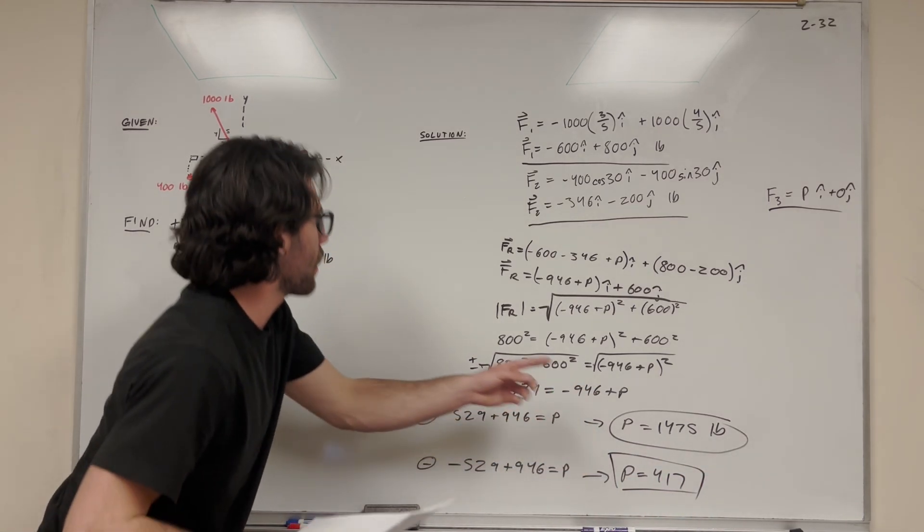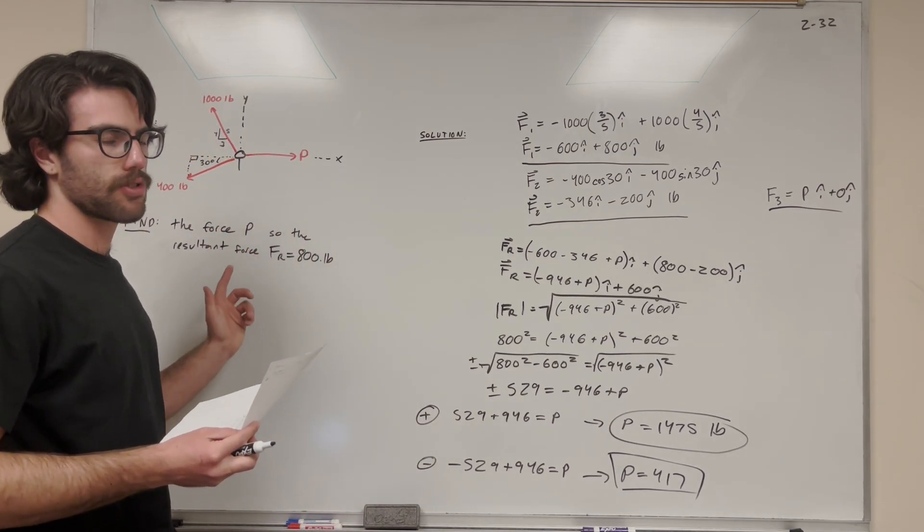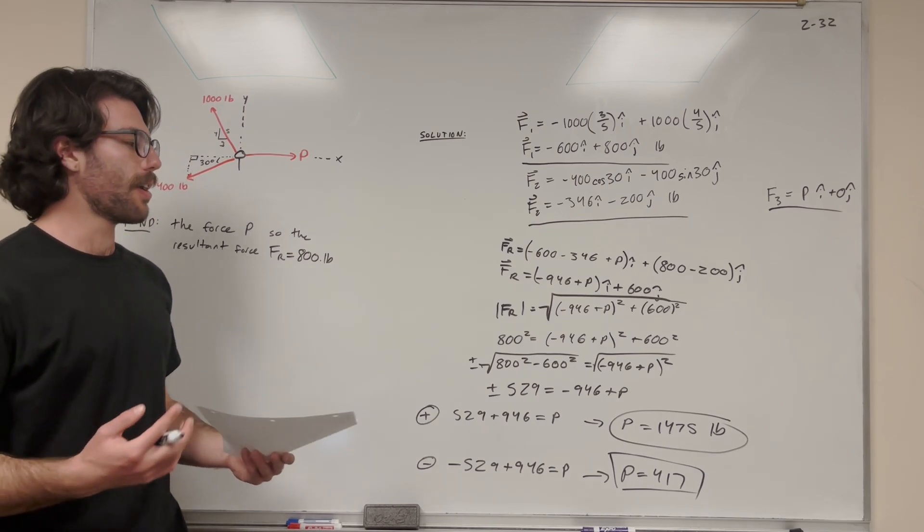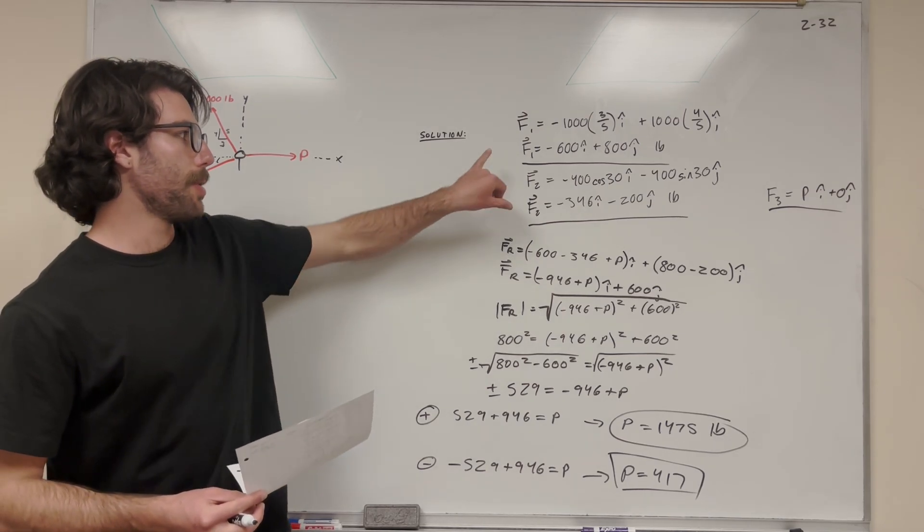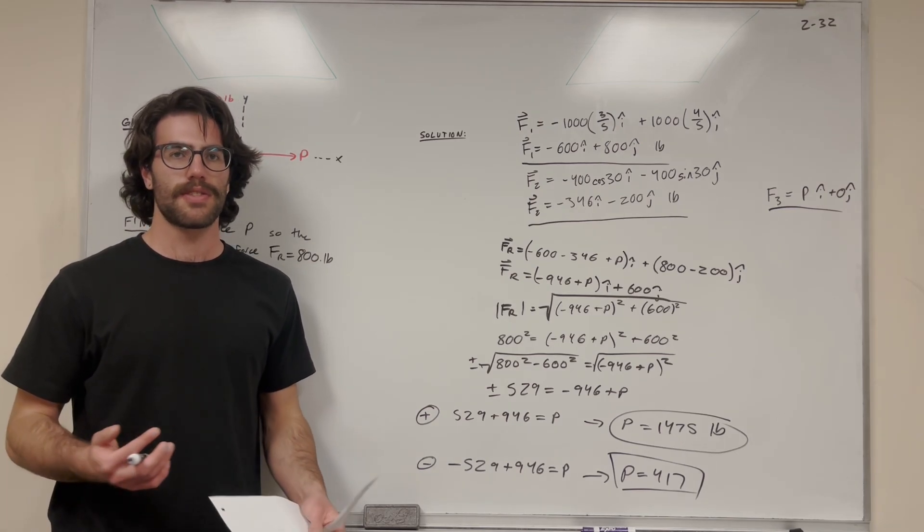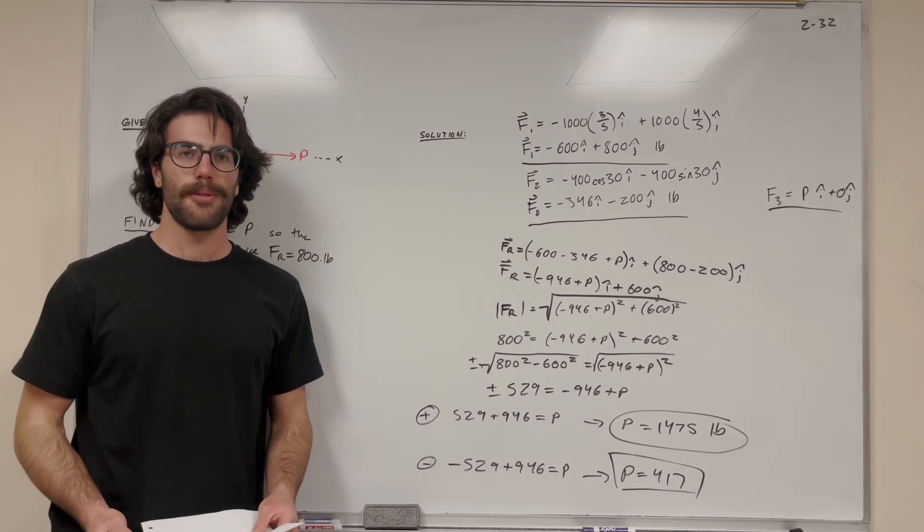If we plug in either of these answers for p, we're going to get the same force resultant of 800 pounds. That's how you solve this problem, not too tricky. It's just about knowing how to break them out into vectors and adding them together. Thank you for watching. Check out my statics playlist for more videos from the same book. See you in the next video. Peace.